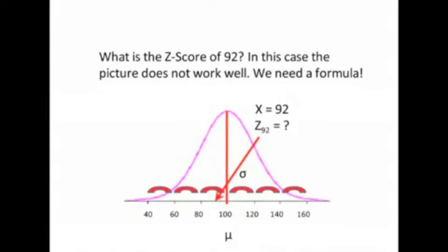That one was easy because we had a real nice pretty little picture. What is the z-score of 92? You see, things get a little bit more complicated. When I ask you what is the z-score, I'm asking you how many standard deviations above or below the mean does the data point 92 lie. In this case, the picture doesn't work well. We actually need a formula.